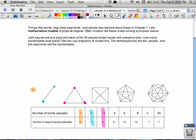We get to four people. One, two, three, four. And all of a sudden, we jump up to six handshakes. And then I go to five people. One, two, three, four, five. And I see that with five people, there are ten segments, or in other words, ten handshakes.